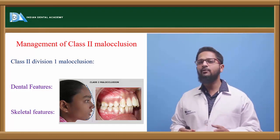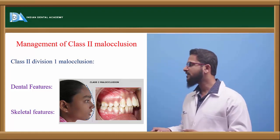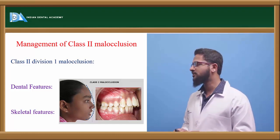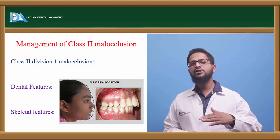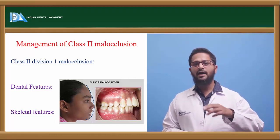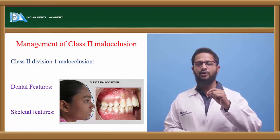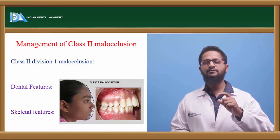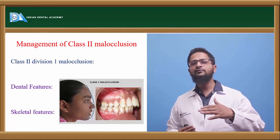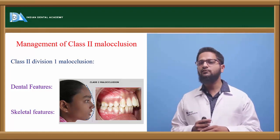Now we will see in detail about Class II Division I malocclusion. What are the dental features? The molar relationship will be either Class II or end-on molar relationship. There will be severe proclination of the maxillary anterior teeth. Since the maxillary anterior teeth are severely proclined, the upper and lower lip will not come in contact — there will be clear separation with no proper lip seal. Since the upper anterior teeth are proclined, the lower teeth are free to erupt, causing an exaggeration of the curve of Spee.